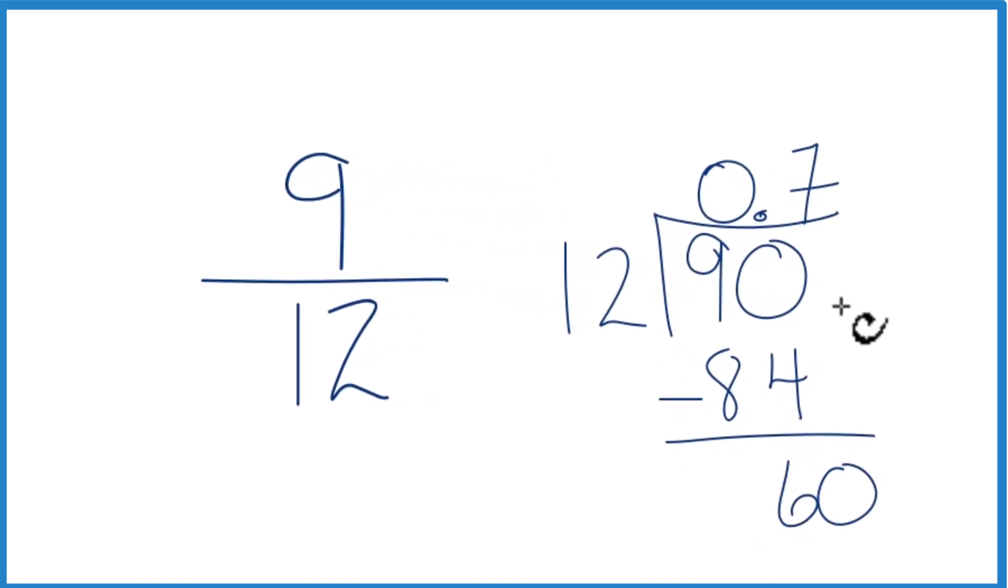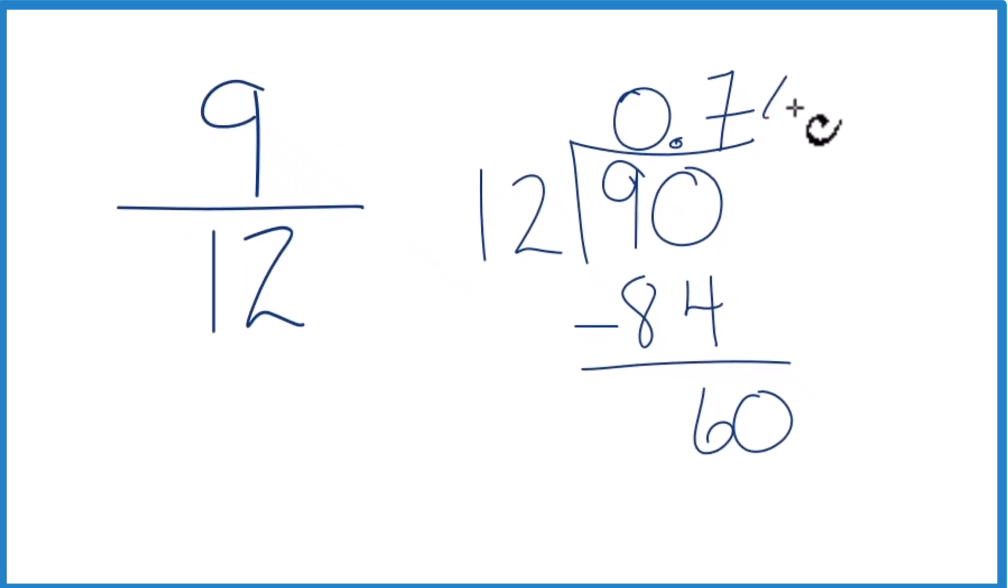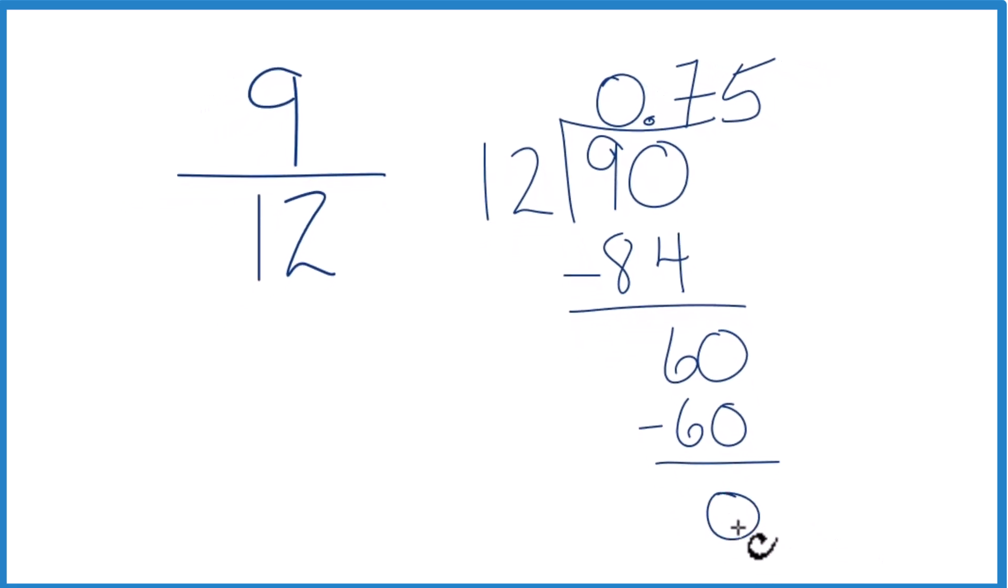We'll call it 60 and move over 1. And 5 times 12, that's 60. Subtract, remainder of 0. So we end up with 9 twelfths. The fraction equals the decimal 0.75.